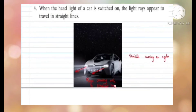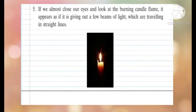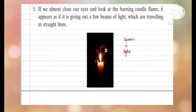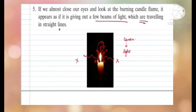Moving on to the candle — this is an experiment you can also perform. Light a candle and observe it very closely. You will see that there are beams of light going in all directions, but in straight lines — the light is not going in a curved path, it moves in a straight line. If you almost close your eyes and look at the burning candle flame, it appears as if it is giving out pure beams of light travelling in a straight line.